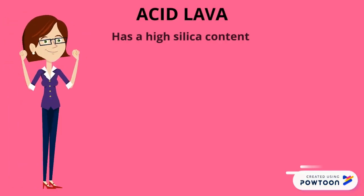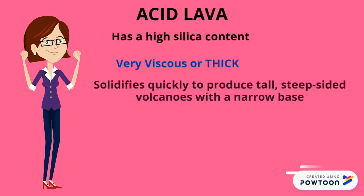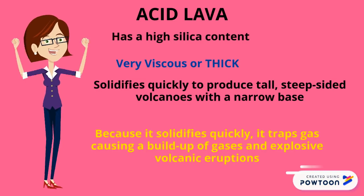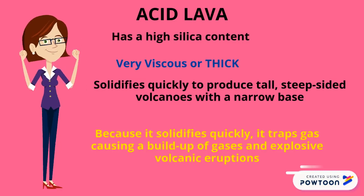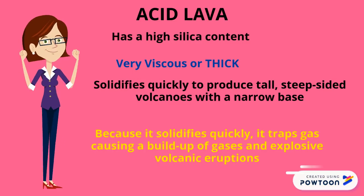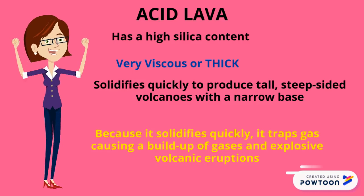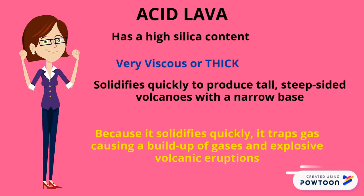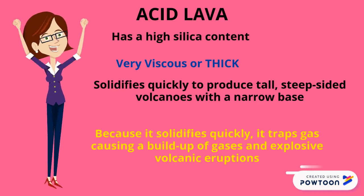On the other hand, acid lava is very viscous or thick and it solidifies very quickly to produce tall, steep-sided volcanoes with a narrow base.